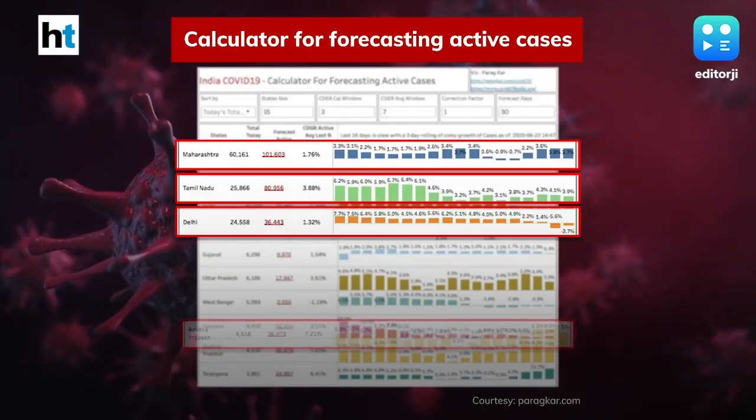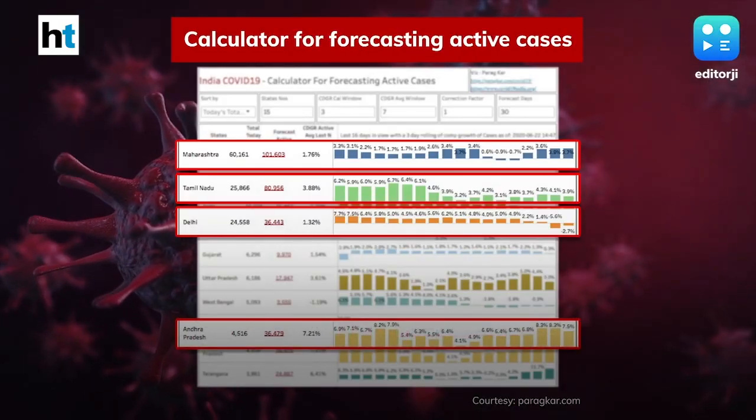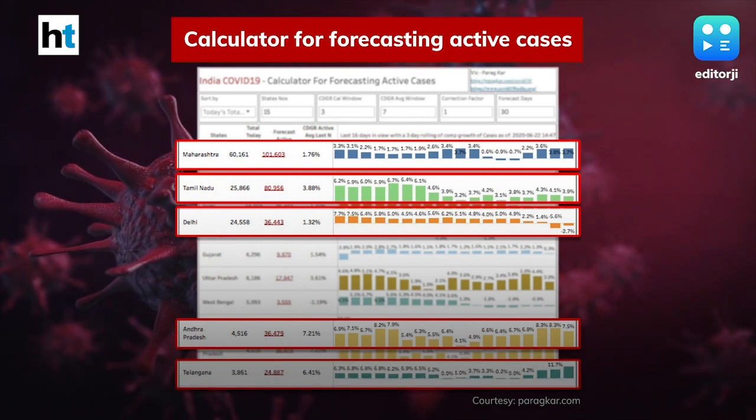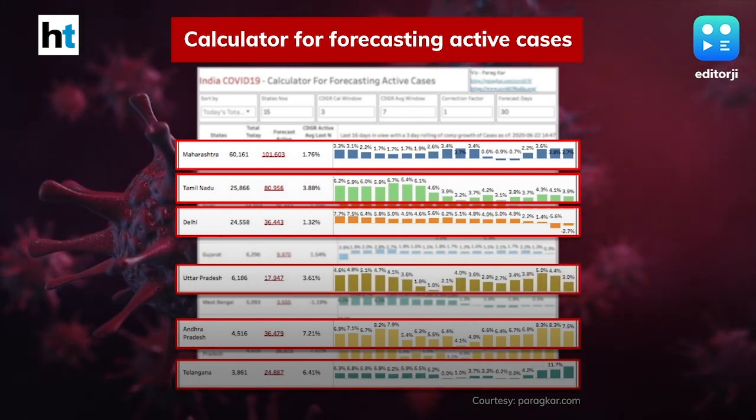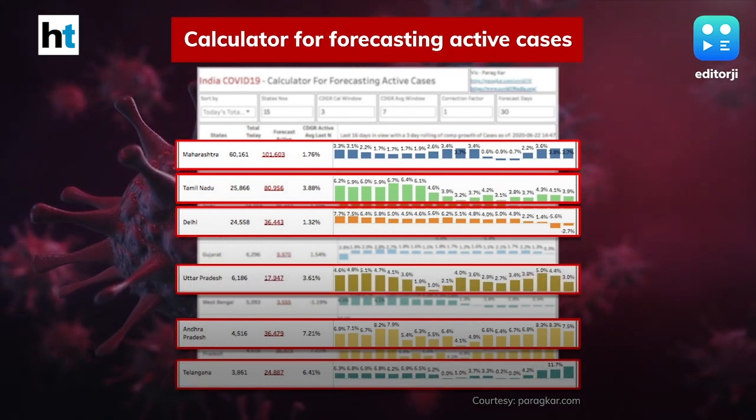We are starting to see growth also coming in other states, including some states which have had low numbers till now but whose growth rates are now rather high. Andhra Pradesh, Telangana, UP — these are some states where the growth rate is a little higher than it should be, and so you should continue to monitor this to see what happens.